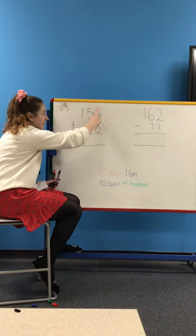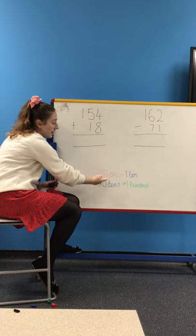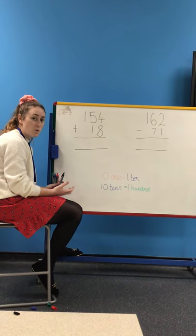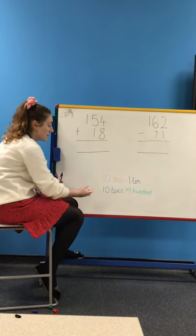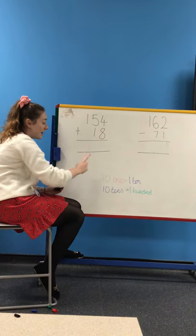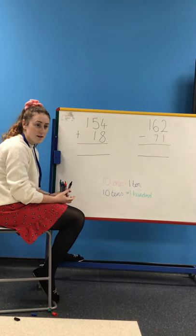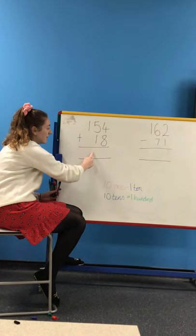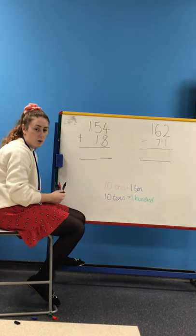The children need to know that 10 ones, that's this column here, the smallest one, is equal to 1 ten. So we can change 10 ones for 1 ten. And the same goes for our tens, so this second column here. If we have 10 tens, we can exchange that for 1 hundred because we cannot have two digits in that one column.